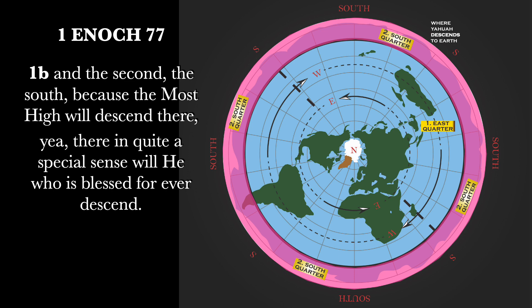Part B, verse 1: 'And the second, the South, because the Most High will descend there. Yea, there in quite a special sense will he who is blessed forever descend.' That's Yahuwah. Now, what is the perspective of Enoch here? The world has an edge — an ice shelf, if you will — in which the firmament fastens. He defined it as having an edge in four different directions. This is fitting to everything covered thus far, and it's in the south of the whole. You're still south no matter where you go around that ring. This is Antarctica.